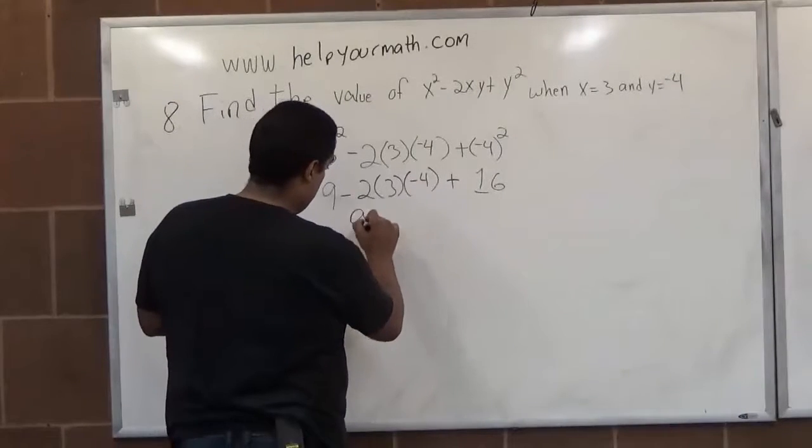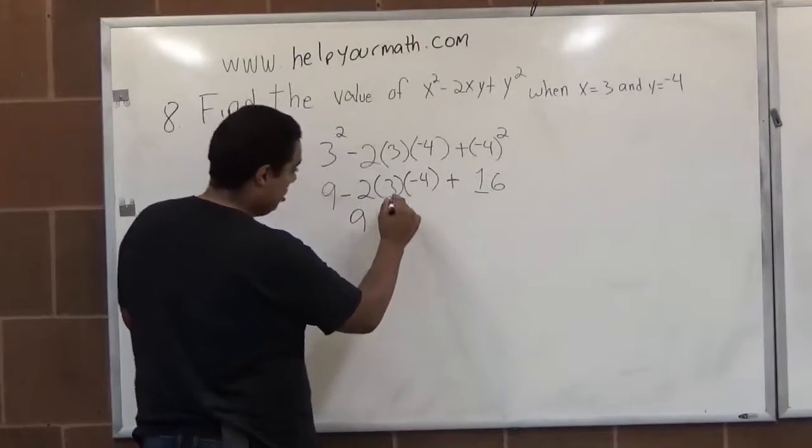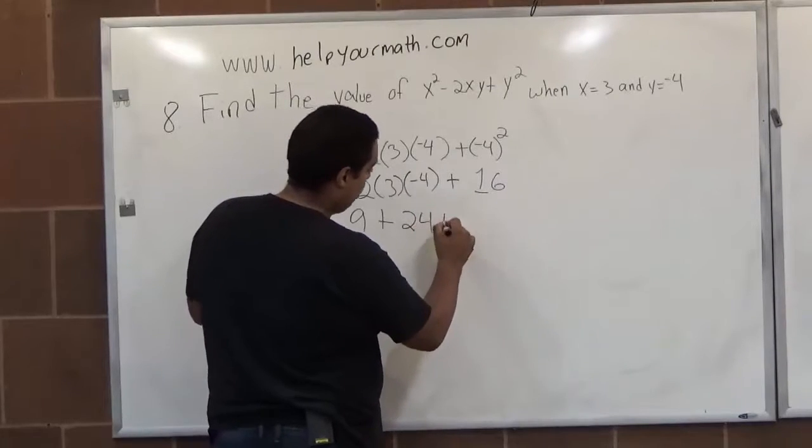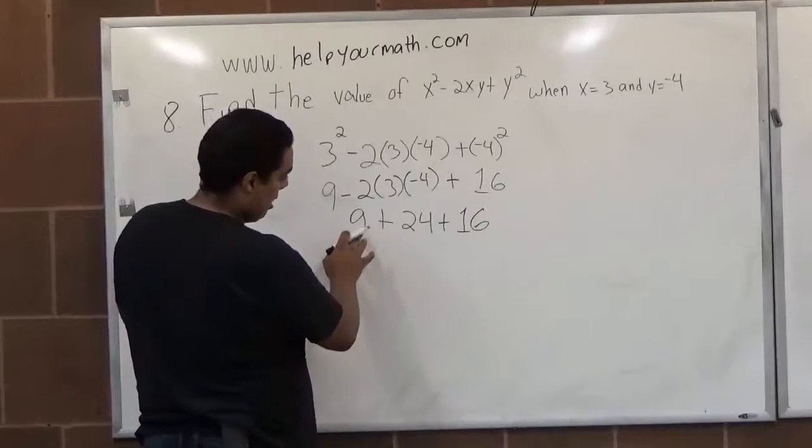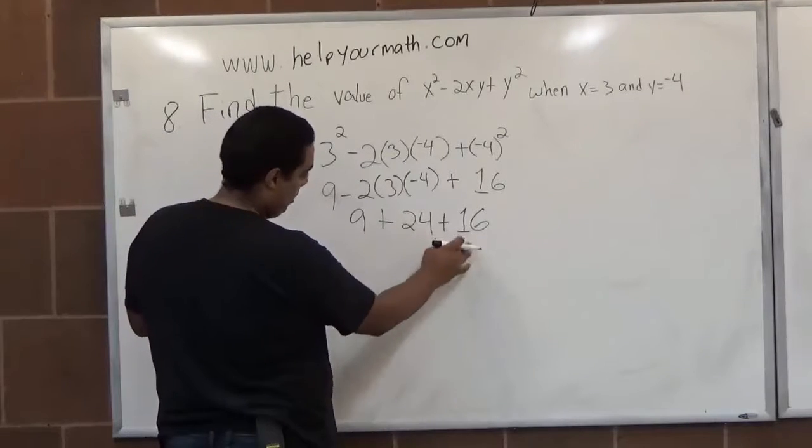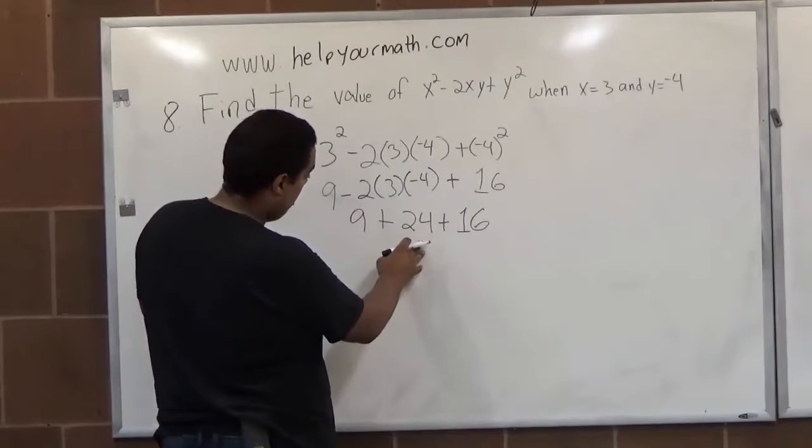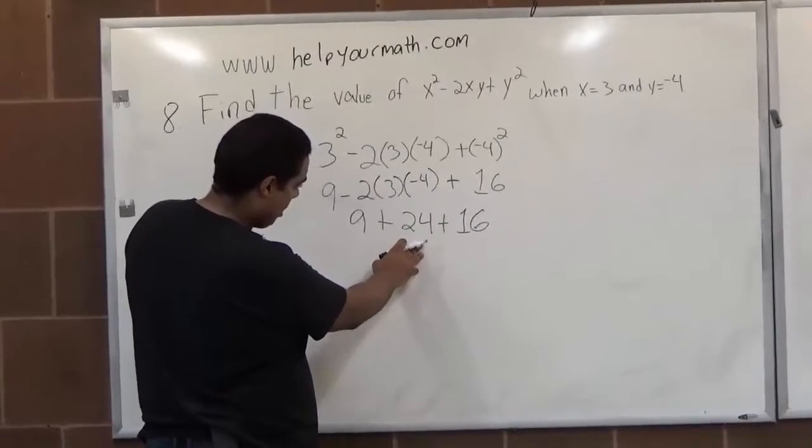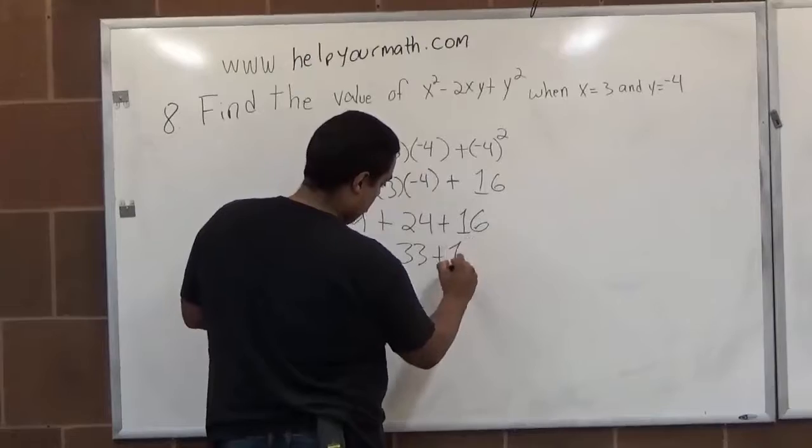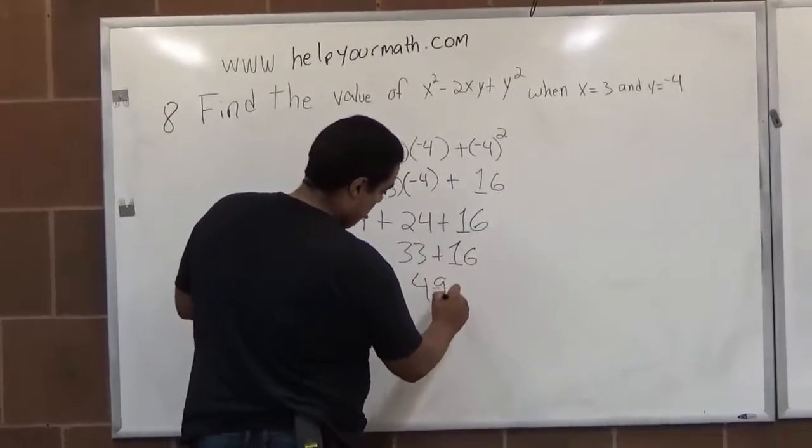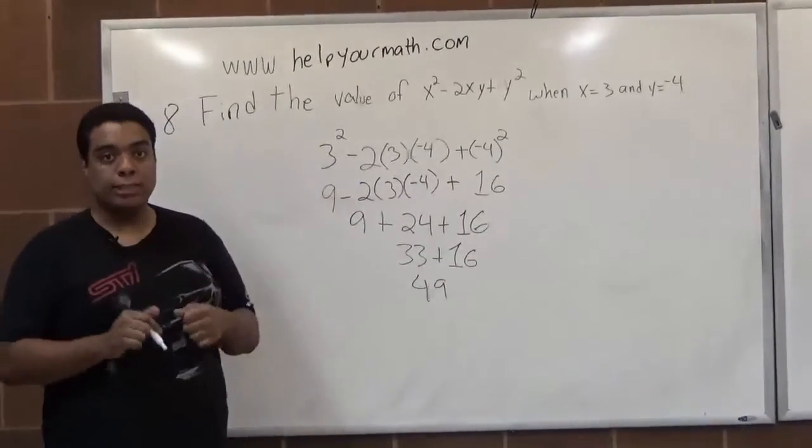So we have 9 plus 24 plus 16. 9 plus 24 is 33. And 33 plus 16 is 49. That's the answer.